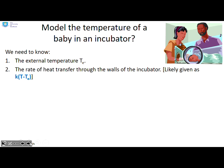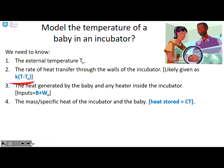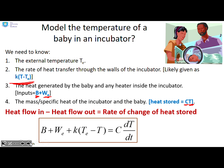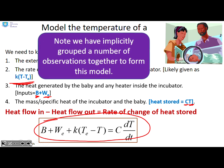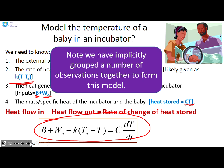What about the temperature of a baby in an incubator? What do we need to know? We need to know the external temperature Te, and the rate of heat transfer through the walls of the incubator. That's likely to be something like some constant times the temperature in the incubator minus the external temperature. The heat generated by the baby and any heater inside the incubator, so B for baby and heat generated by the heater. And then what's the mass or specific heat of the incubator and the baby combined and therefore how much energy is stored? So we've got the specific heat C times the temperature T. We come up with a balance equation. The heat flow in minus the heat flow out is going to be the rate of change of heat stored. And you end up with an equation here. What do you see that we've done? We've implicitly grouped a number of observations together to form this model.